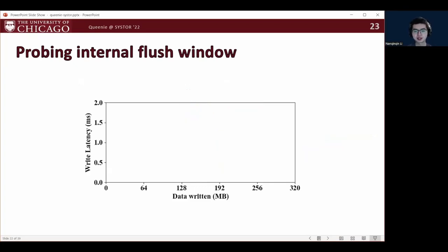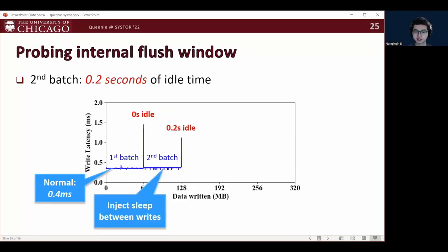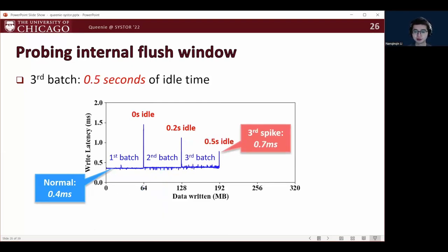Now, let's restart the probing process to see how this works. So for the first batch of 64 megabytes, we don't inject idle time. Then the latency spike is going to be on the level of 1.5 milliseconds, just like those in the previous figure. For the second batch, as we inject 0.2 seconds of idle time, we can see that the latency spike decreases to 1.1 milliseconds. For the third batch with 0.5 seconds of idle time, the spike further decreases to 0.7 milliseconds.